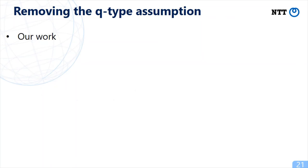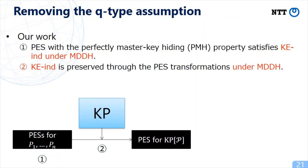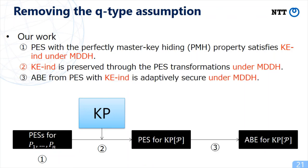In this work, we proved the following three theorems for KEIND. The first is that a pair encoding scheme with a perfectly master key hiding property satisfies KEIND under the MDDH assumption. The second is that KEIND is preserved through the basic three transformations for pair encoding schemes under the MDDH assumption. The third is that we can construct an ABE scheme from a pair encoding scheme with KEIND, which is adaptively secure under the MDDH assumption. So, as long as the starting pair encoding schemes satisfy the perfectly master key hiding property, we can construct an ABE scheme for KP of P following our framework in a modular manner.